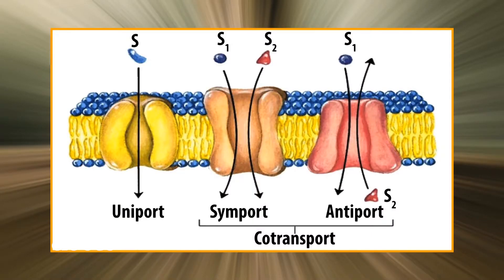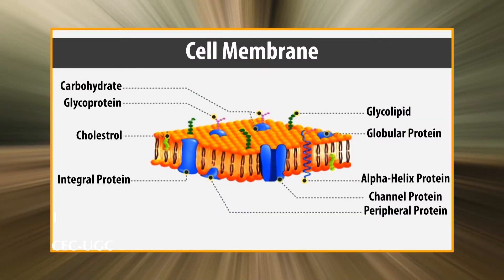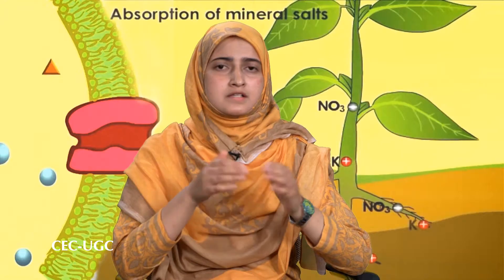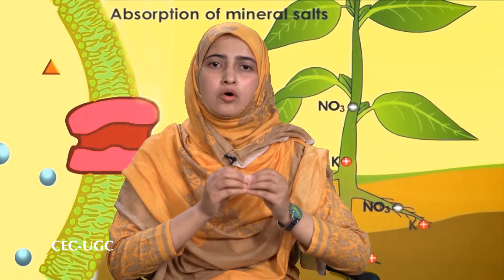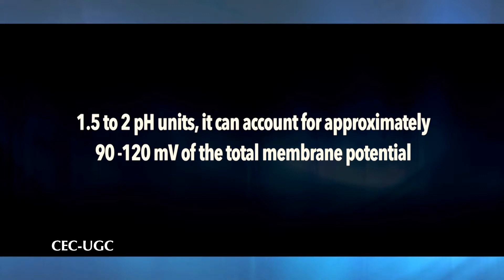There are several particularly interesting consequences of the ATPase proton pump. First, a single ion species is translocated in one direction — this is known as the uniport system. Second, because the ion transported carries a charge, an electrochemical gradient is established across the membrane — in other words, the ATPase proton pump is electrogenic. It contributes directly to the negative potential difference across the plasma membrane. In fact, the electrogenic proton pump is a major factor in the membrane potential of most plant cells. Since the proton gradient across the plasma membrane is normally in the order of 1.5 to 2 pH units, it can account for approximately 90 to 120 millivolts of the total membrane potential.